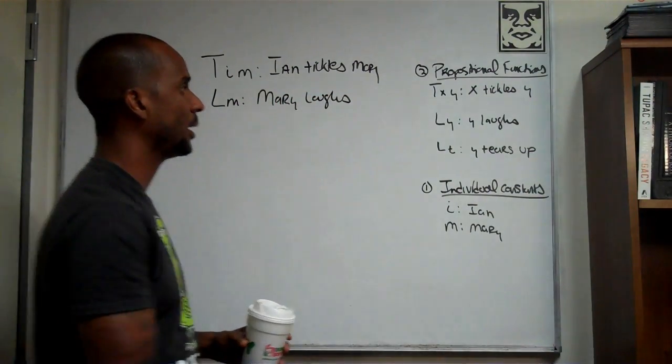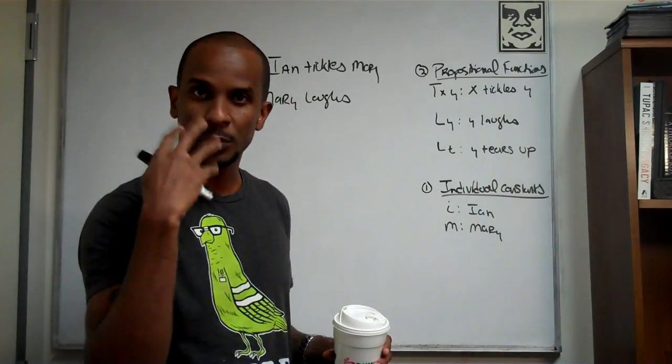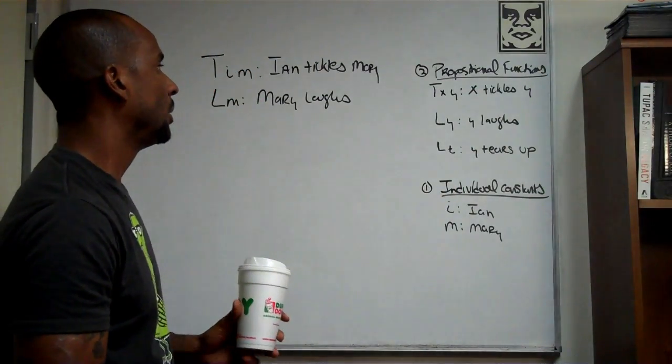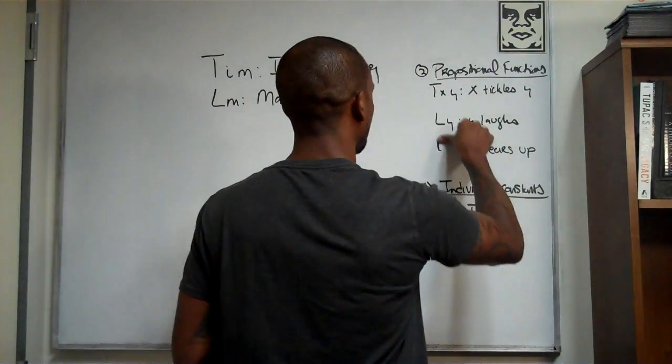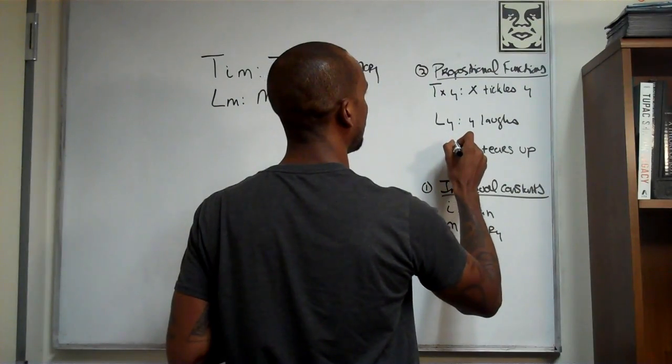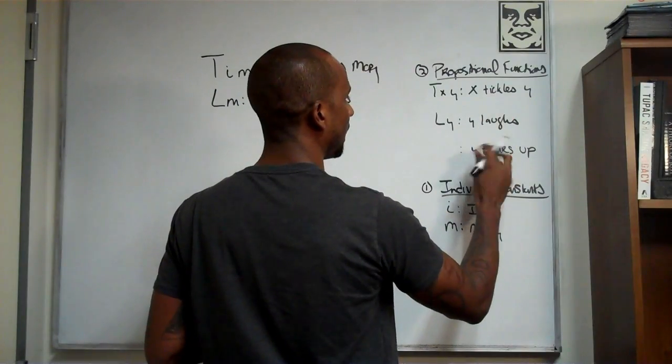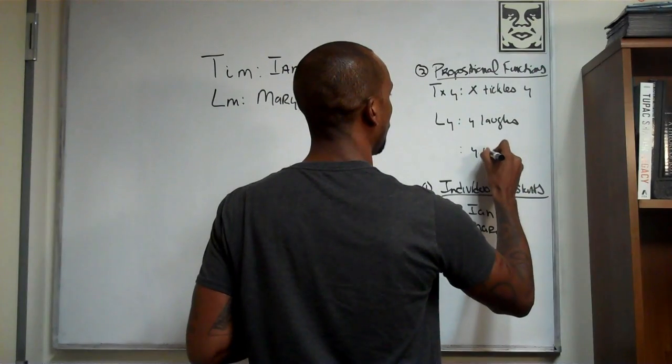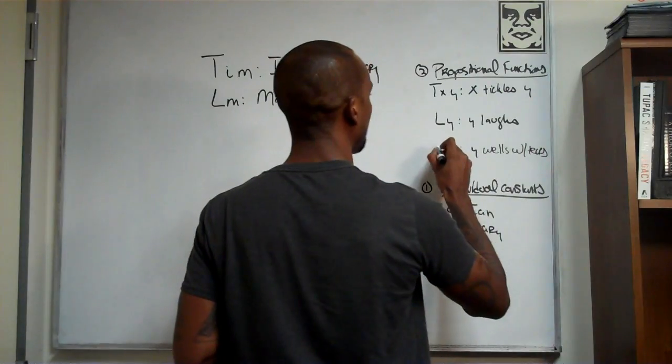Okay, and then finally, we can talk about someone tearing up, meaning that their eyes get welled with tears. So we can say that someone tears up. Hold on, let me see. Sorry, I did that wrong. Someone tears up, it would be... Unless we're tears, let's use, since we've already used t for tickle, we'll say wells up with tears. Wells with tears. And we'll use w.